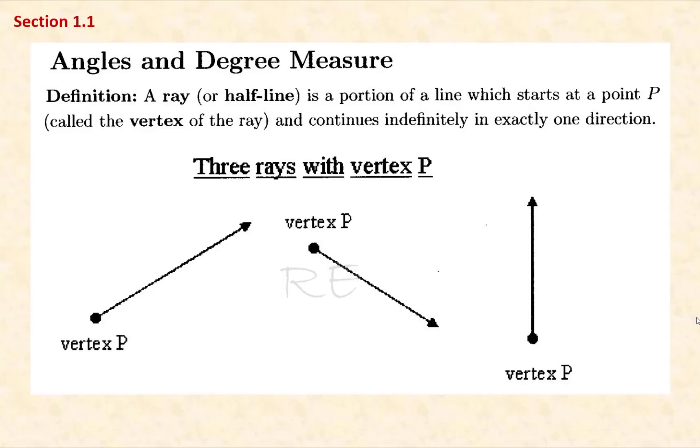A ray can be defined as a portion of a line that has a fixed starting point but no endpoint. It extends infinitely in one direction. The fixed starting point is called a vertex.